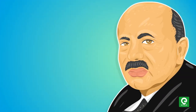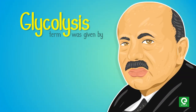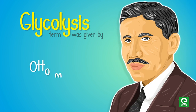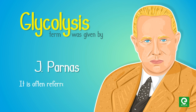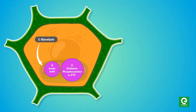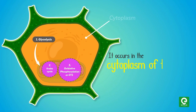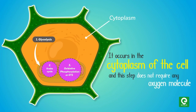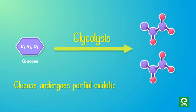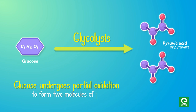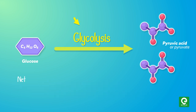Let's look at glycolysis first. The term glycolysis was given by Gustav Emden, Otto Meyerhoff, and J. Parnas, and it is often referred to as the EMP pathway. It occurs in the cytoplasm of the cell and does not require any oxygen. In this process, glucose undergoes partial oxidation to form two molecules of pyruvic acid, or pyruvate.